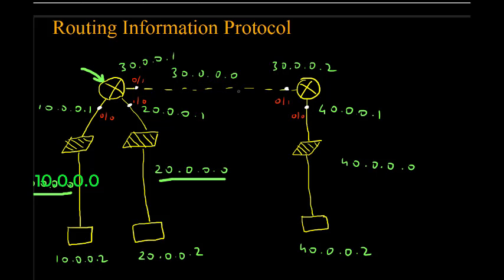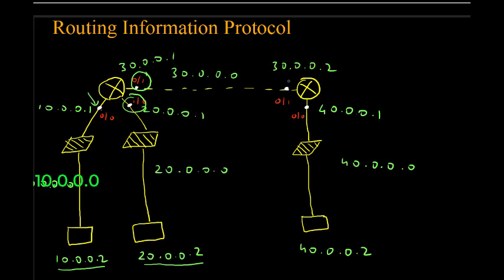Now we are assigning the addresses. This particular PC is 10.0.0.2. This particular router has a gateway of 10.0.0.1. This interface is 20.0.0.1, this interface is 30.0.0.1, and this interface is 30.0.0.2. This interface is 40.0.0.1, and this PC address is 40.0.0.2.